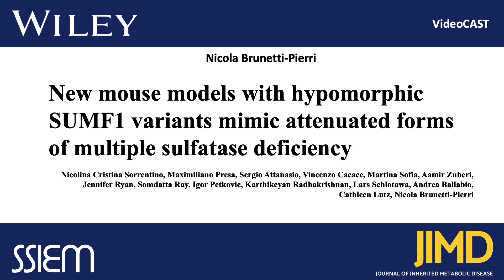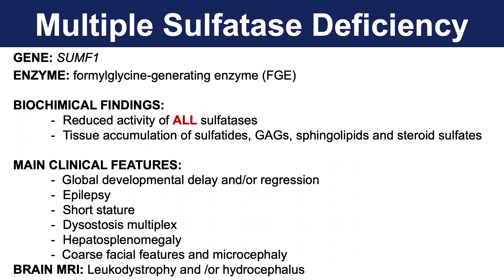Multiple sulfatase deficiency is due to mutations in the gene SUMF1, which encodes for an enzyme that activates all sulfatases. As a consequence of the deficiency of this enzyme, all the sulfatases have reduced activity, and there is accumulation of multiple compounds that are the substrates of all these sulfatases in multiple tissues.